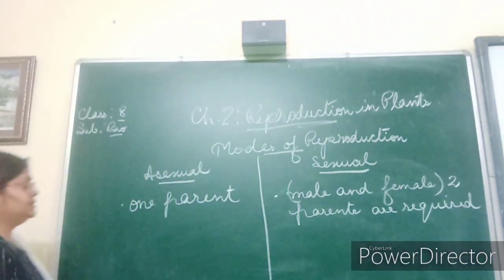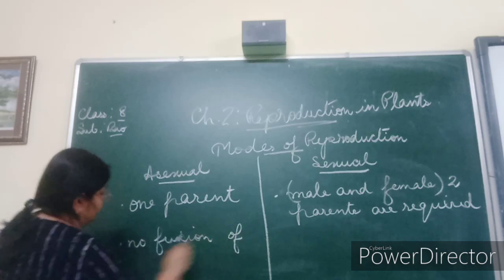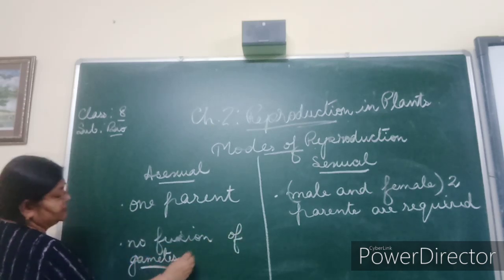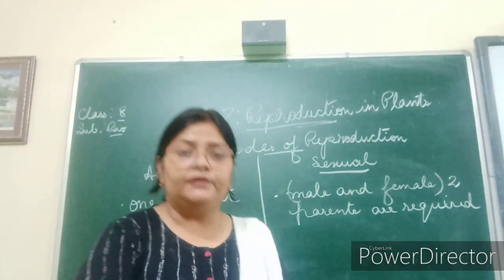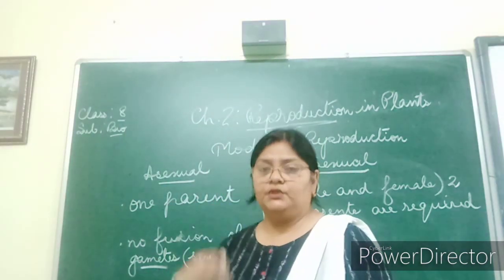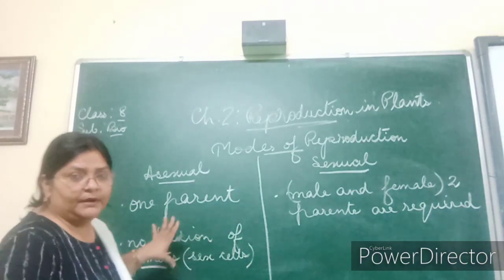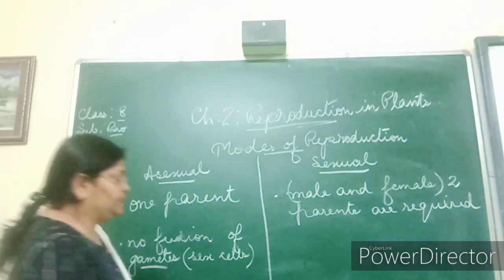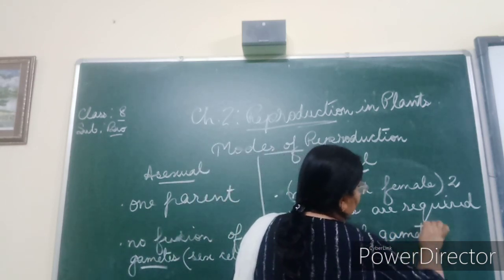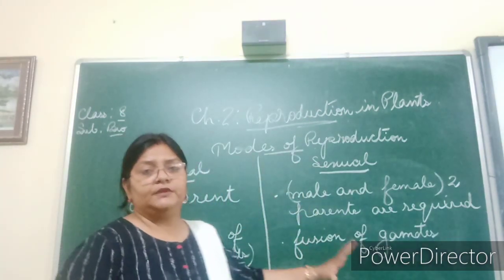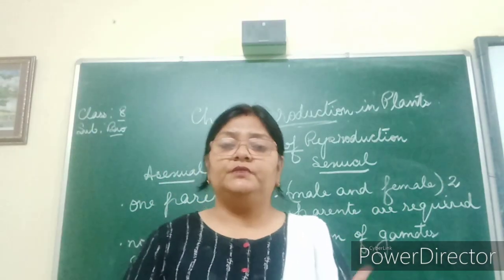In asexual reproduction there is no fusion of gametes. Gametes are special sex cells produced by the male or female reproductive system — those special sex cells that have the power to fuse and produce a new living being. In asexual reproduction there is no requirement of such sex cells. But in sexual reproduction, fusion of gametes is very essential — male and female gametes fuse together.